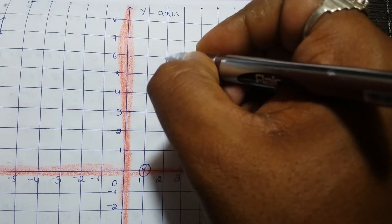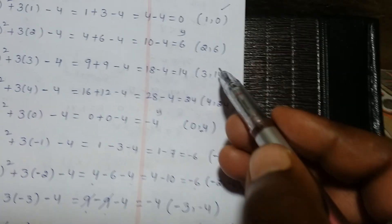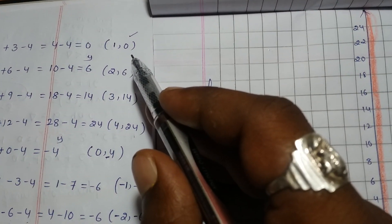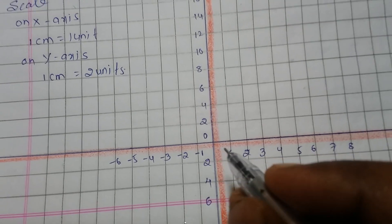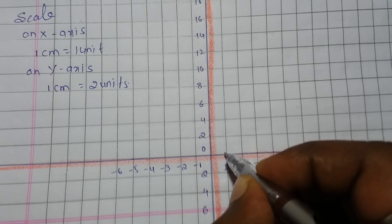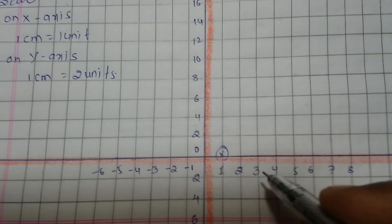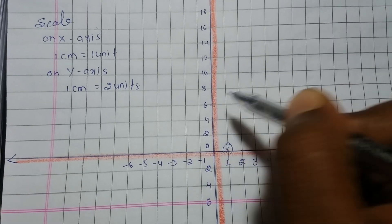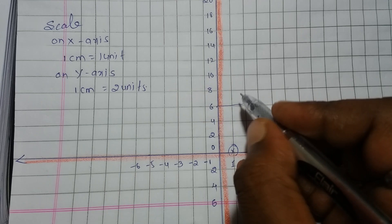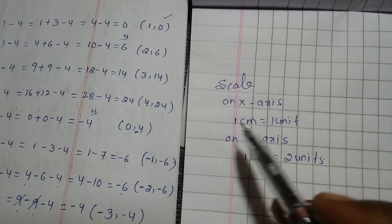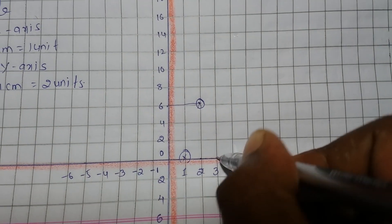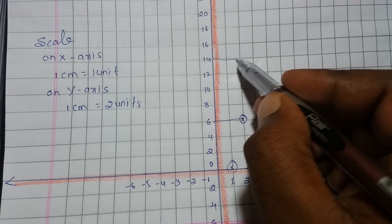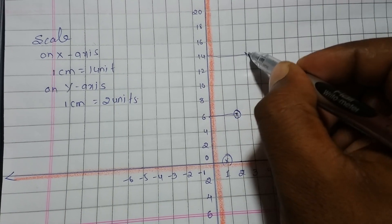For 2 comma 6, x is 2 and y is 6. For 3 comma 14, on x axis we see 3 and on y axis we see 14; these two lines intersect at 3 comma 14. For 4 comma 24, x is 4 and y is 24; these two lines intersect at 4 comma 24.